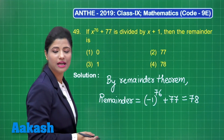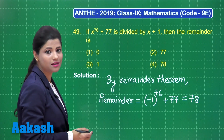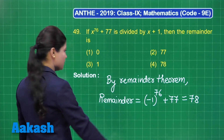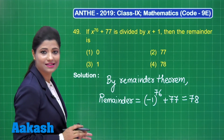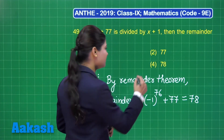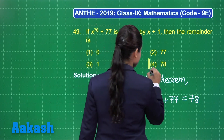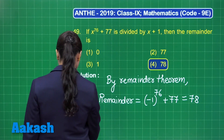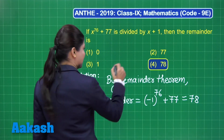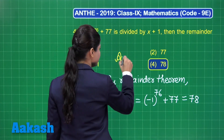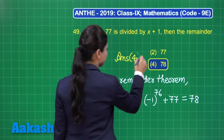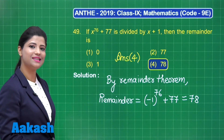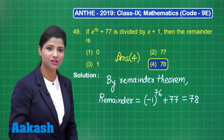In this case, you will definitely obtain the remainder equal to 78. Out of these four options, the remainder is 78, which is present in option number 4. So the answer for this question is option 4. I hope it is clear to you.